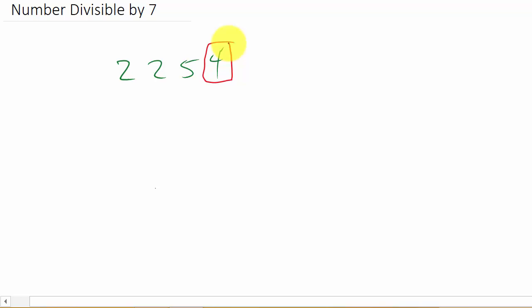Take the last digit and double it. So 4 times 2 equals 8. And then what do you do? You subtract the 8 from the remaining digits.